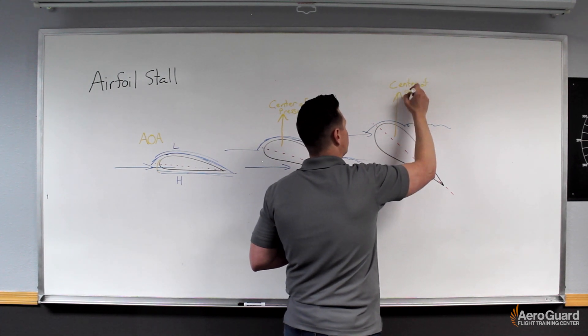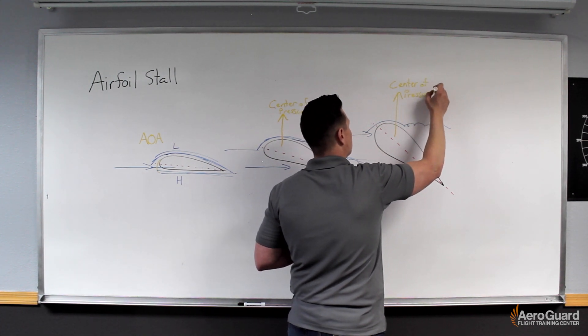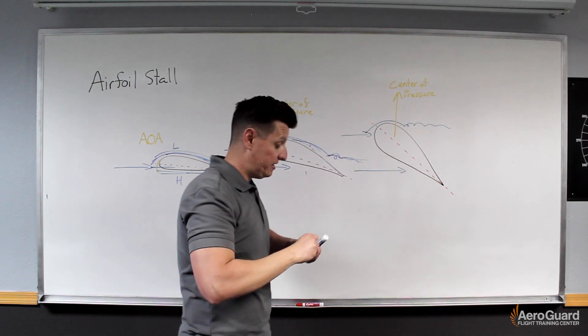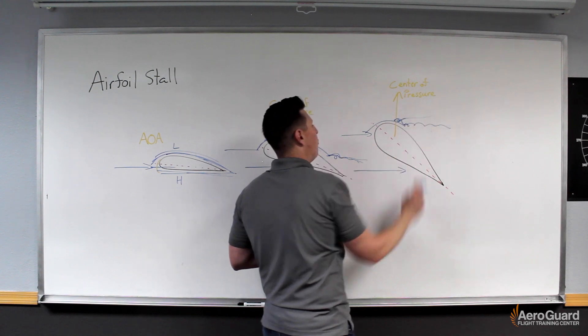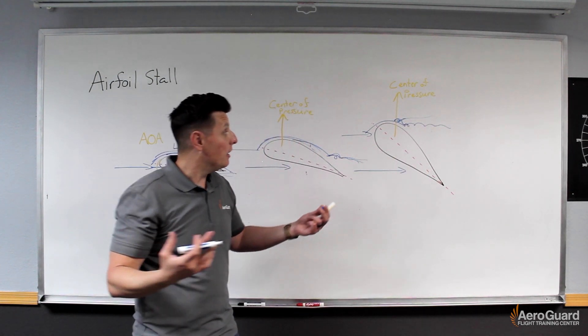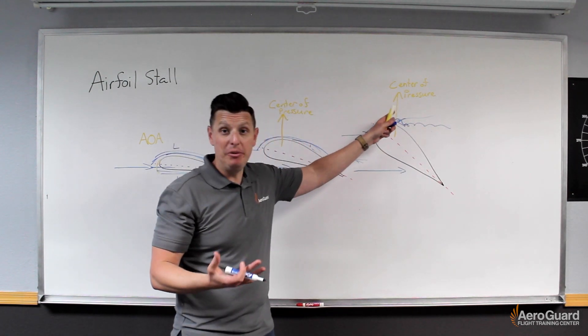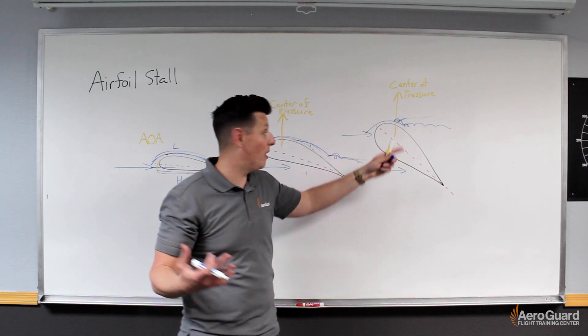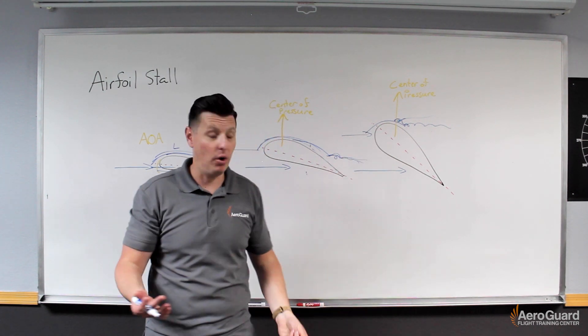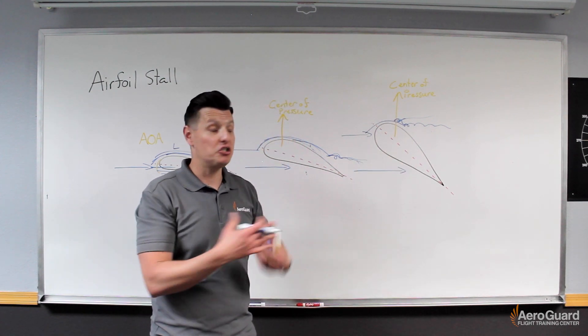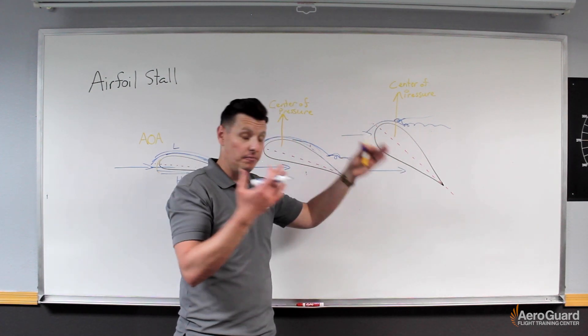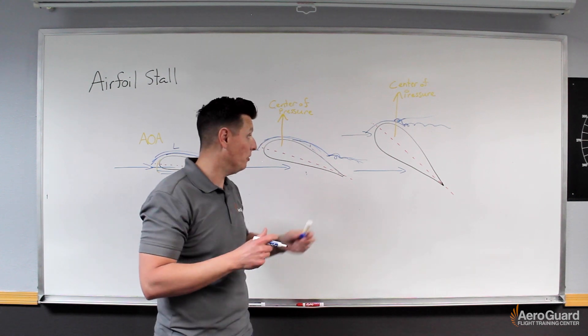Once that separation reaches a point where it reaches this center of pressure, once that separation works its way all the way up to reach that point, now where the majority of our lift is being produced is now stalled. There's no more airflow at that point. This is what we'd identify as being in a stalled condition, or at least the early onset of that stalled condition.